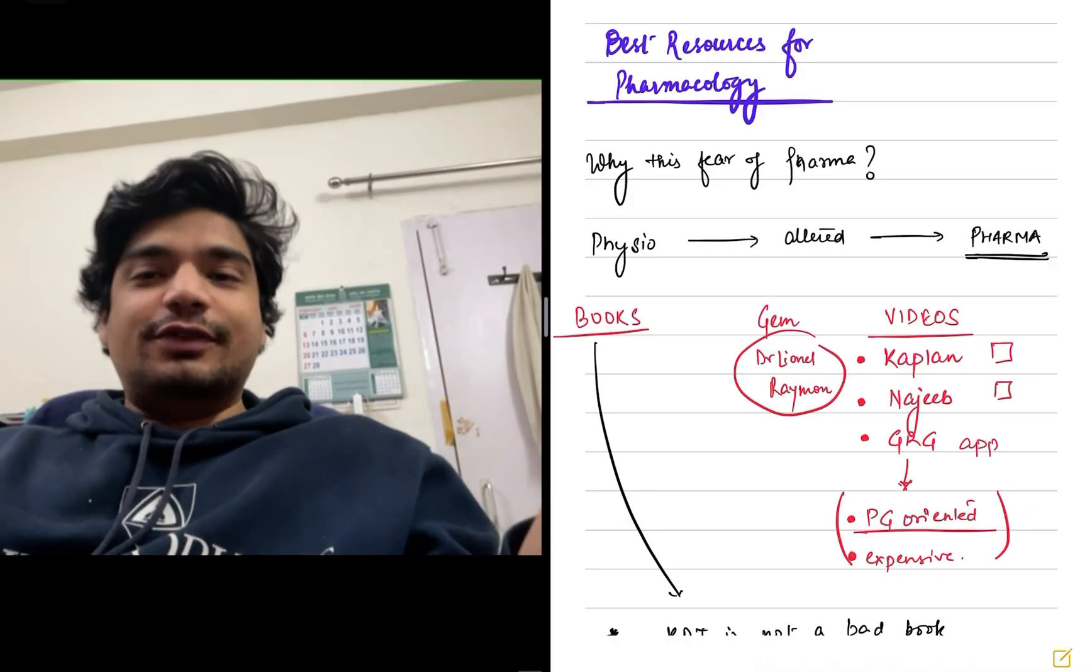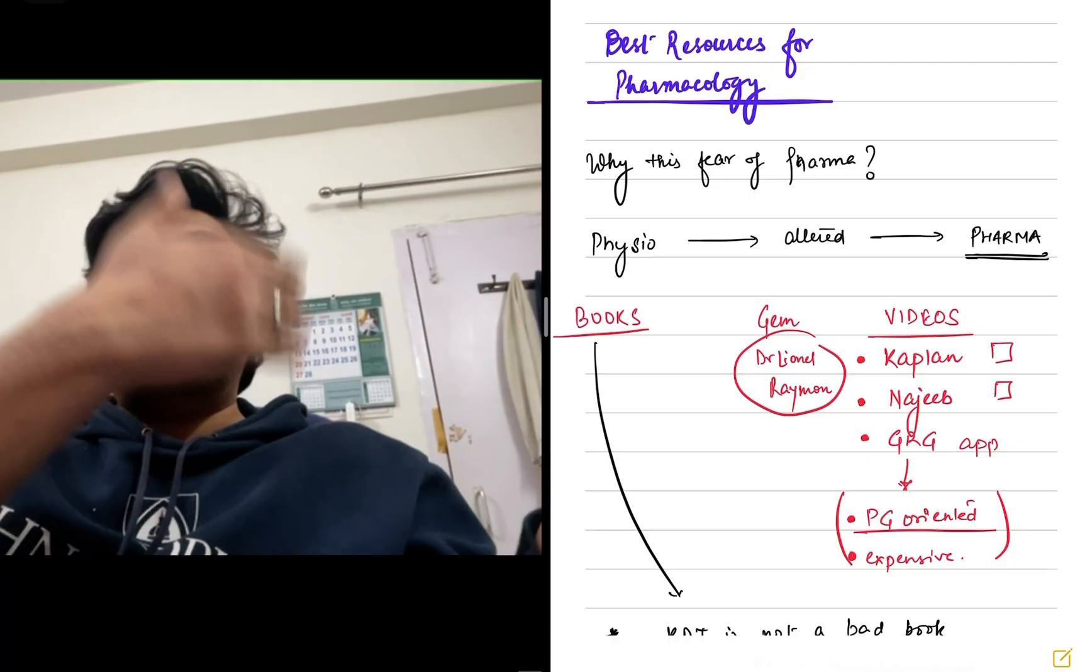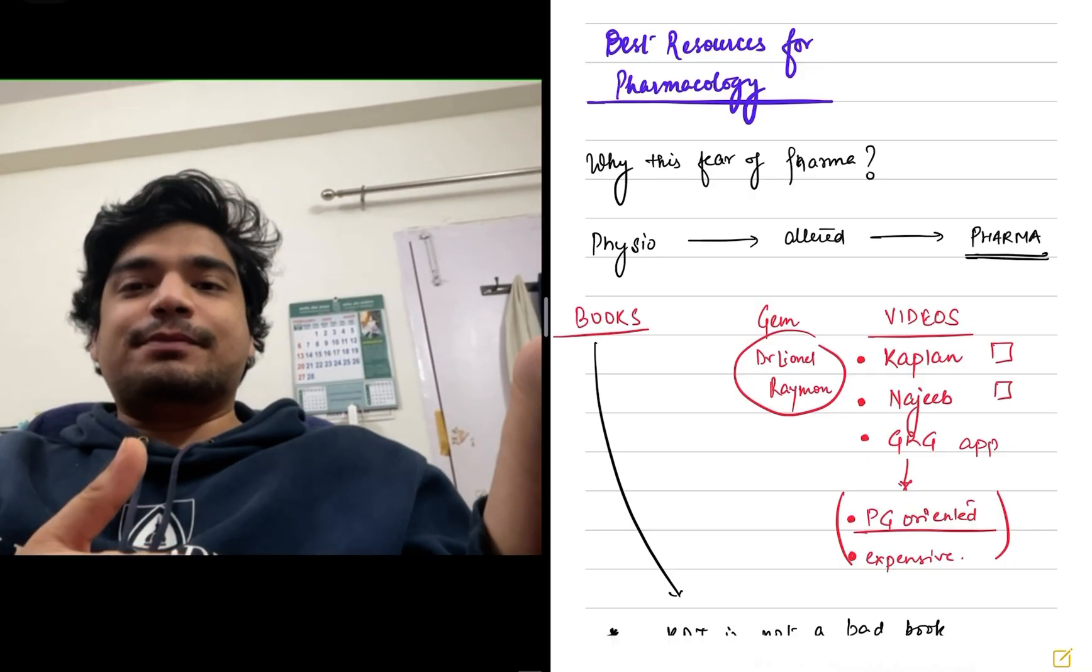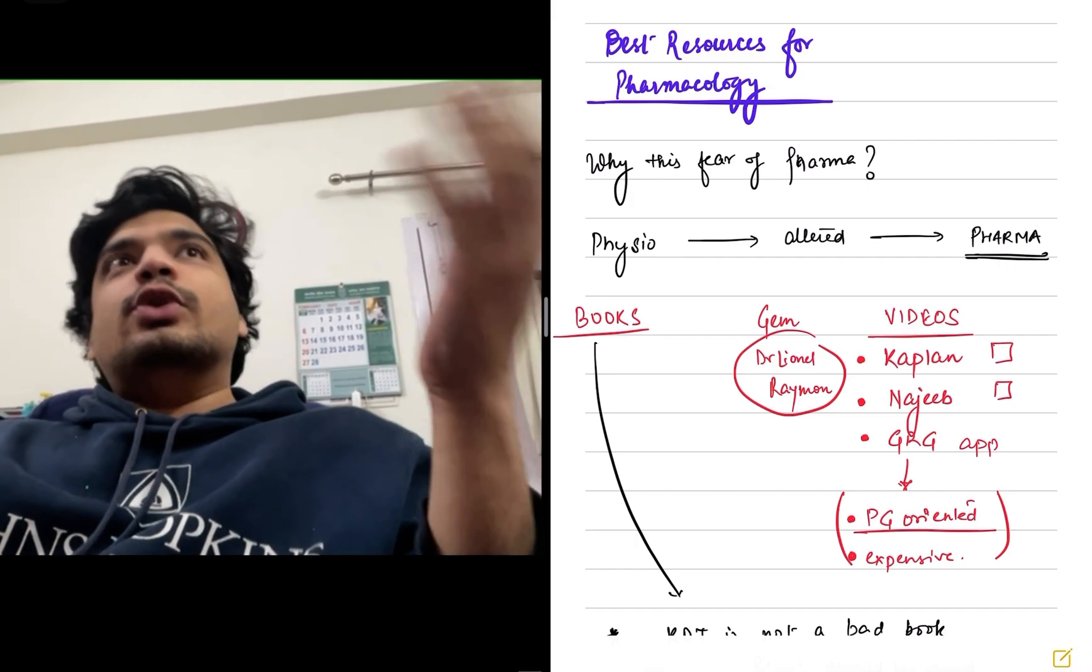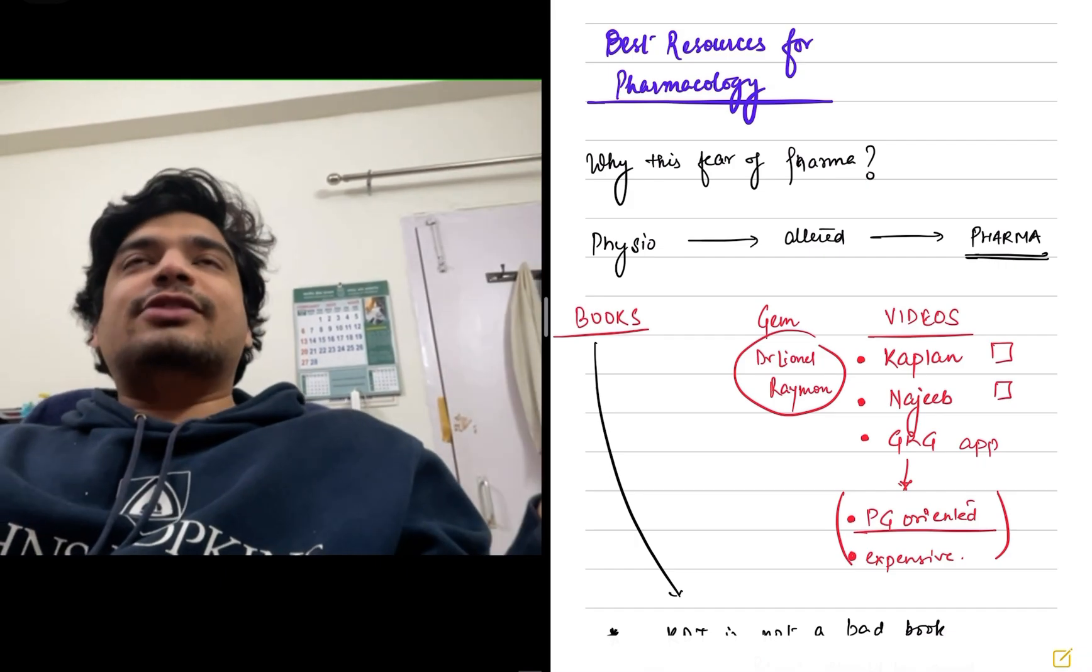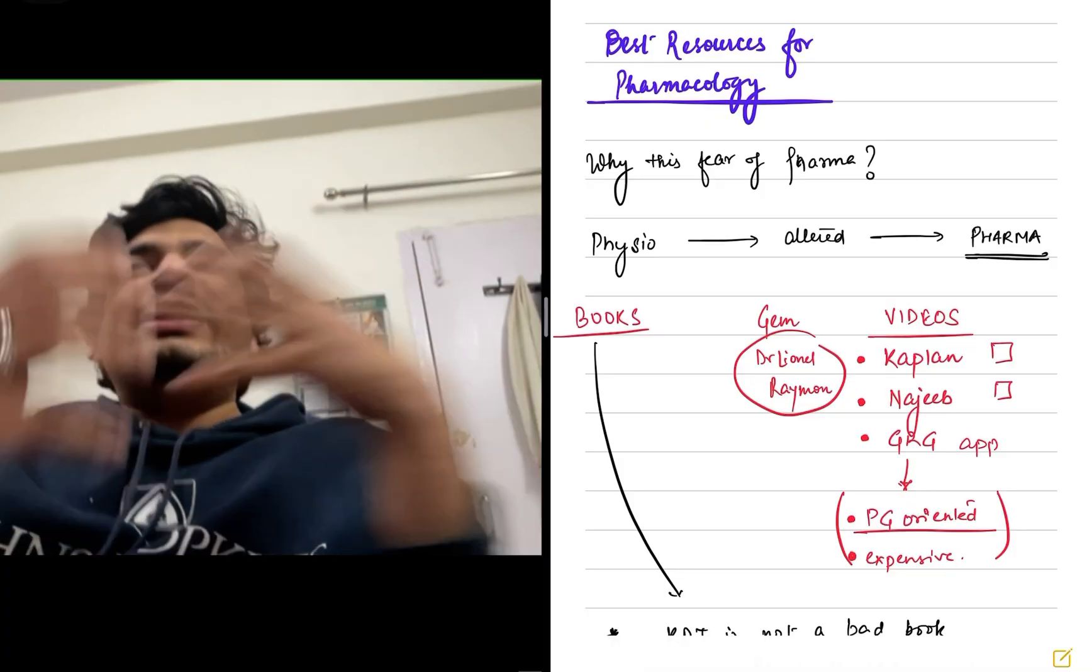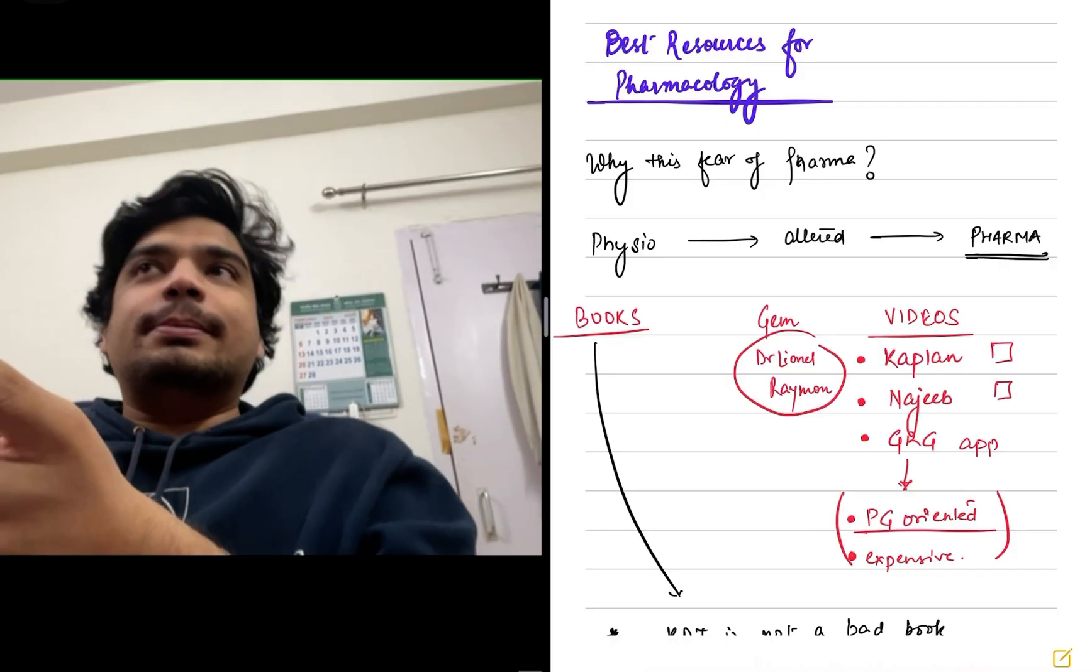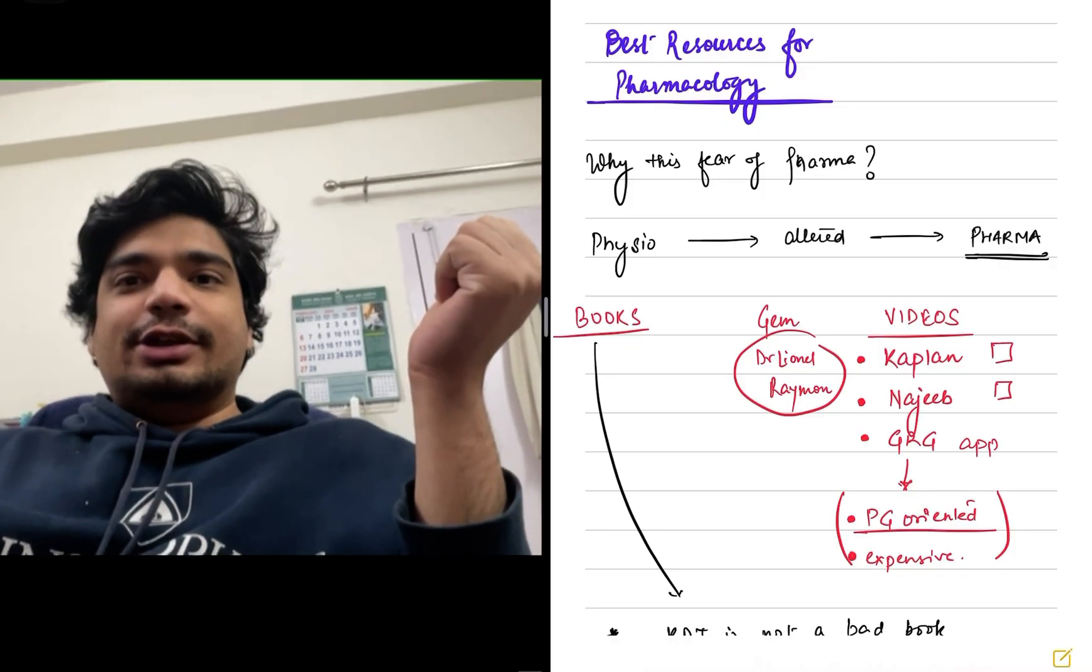Essentially, pharma is nothing but altered physiology, when your physiology is altered in a way that it's acting in a more manner or in a less manner. So let's take hypertension, for example. If you know about RAS, the renin and angiotensin system, then altering that physiology of that system is what makes your ARBs or angiotensin receptor blockers or your ACE inhibitors.